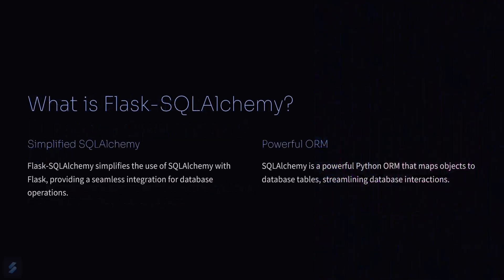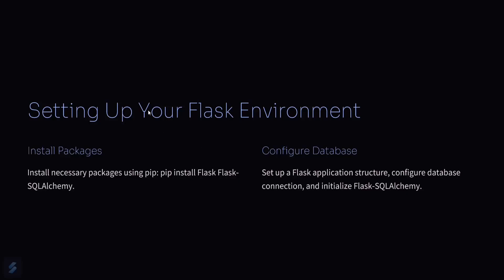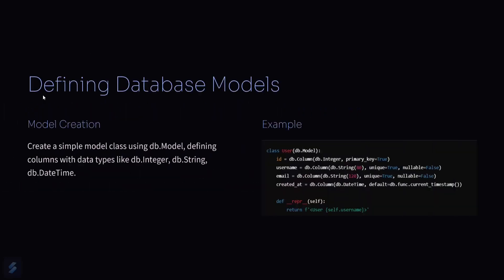First of all, we need to see what Flask SQLAlchemy is. It is a powerful ORM — that is object relational mapping. We need to install some packages and configure our database. In this video I will be using a MySQL database. Then we have to create some models, which will be creating our tables inside our database.